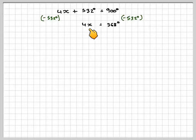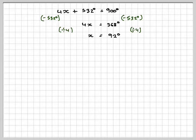In order to find x we need to now divide by 4, and therefore x is going to be 368 divided by 4, which is 92 degrees.